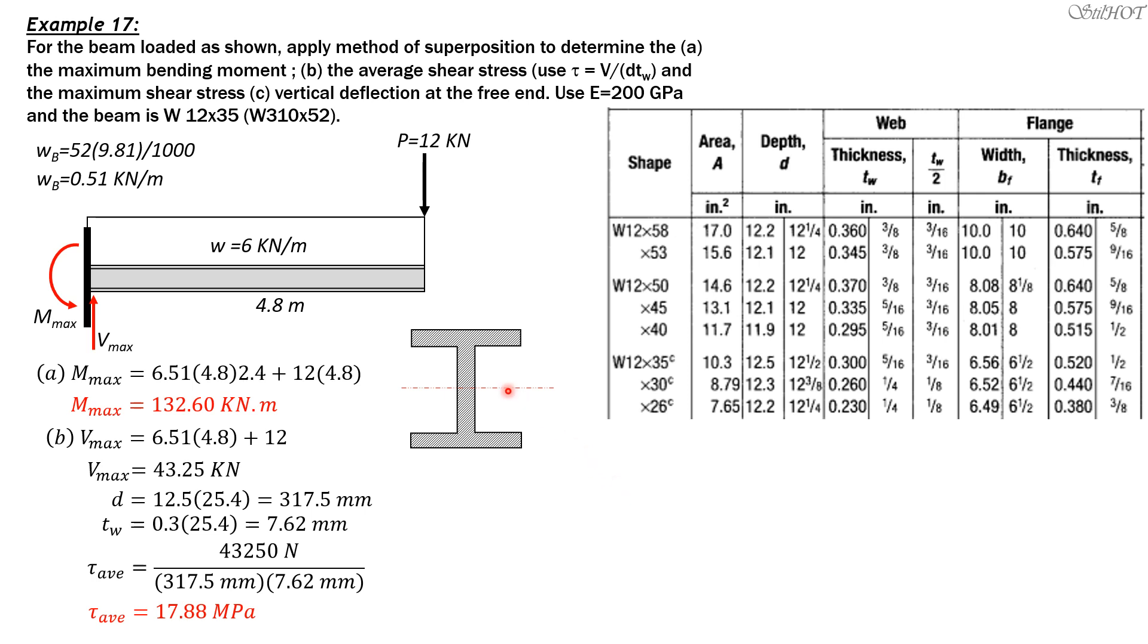This is the neutral axis. The width of the flange, df, is 6.56 inches times 25.4, so that's 166.6 millimeters. The thickness of the flange is 0.52 inches, so 0.52 times 25.4 equals 13.21 millimeters.